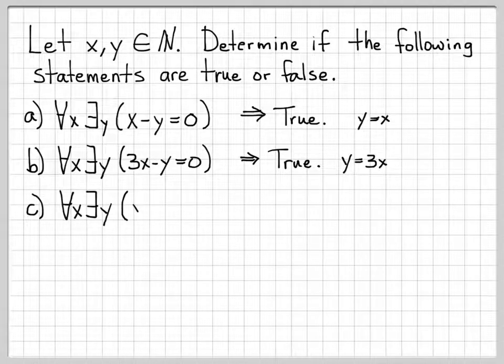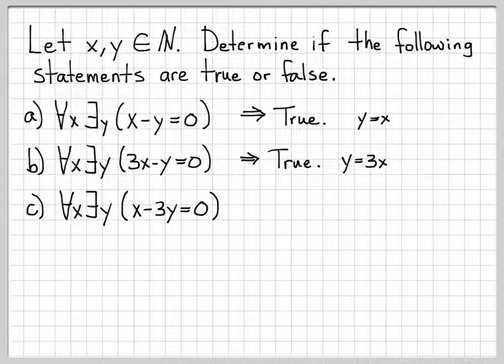Part C, let's change it just a touch. What about for all x, there exists a y such that x minus 3y equals 0? We might be tempted to call this one true again, but it's slightly different than what we did in Part B. Let's think about the case when x equals 3. When x equals 3, I need to come up with a y such that 3 minus 3y is equal to 0. Well that's easy to do. Y would equal 1, and I would have 0 equals 0, and this would be true.